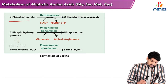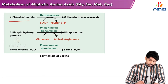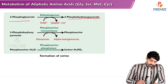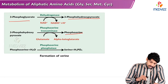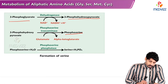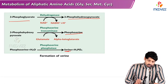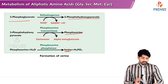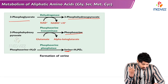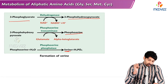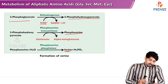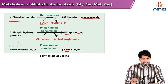In the diagrammatic presentation: 3-phosphoglycerate undergoes dehydrogenation to form 3-phosphodihydroxypyruvate, which by transamination forms phosphoserine, and when the phosphate group is removed, phosphoserine is converted into serine. So there are three steps: dehydrogenation, transamination, and phosphate group removal. The reduced equivalent NAD is converted to NADH + H⁺.